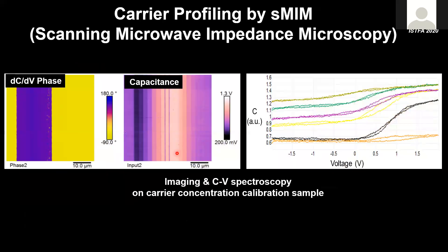There's a third method for carrier profiling based on microwave impedance measurements (SMIM). Whereas previously we measured resistance or capacitance, now we measure a full impedance — often focusing on the capacitive part. We get images similar to SCM: a phase signal gives us N-type and P-type identification, and the amplitude relates to carrier concentration.